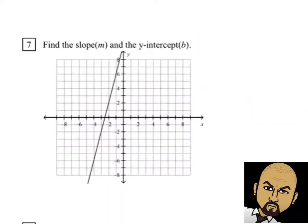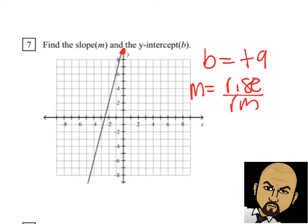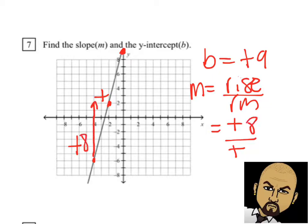Now let's figure out the slope and the y-intercept from a graph. The y-intercept is where the line crosses the y-axis — the approximate value is positive 9. Now for the slope, remember: slope is rise over run. We make our slope triangle. I pick two points, go up positive 8 and to the right 2, so the rise is 8 and the run is 2. Simplifying the fraction gives us 4, so our slope is 4.